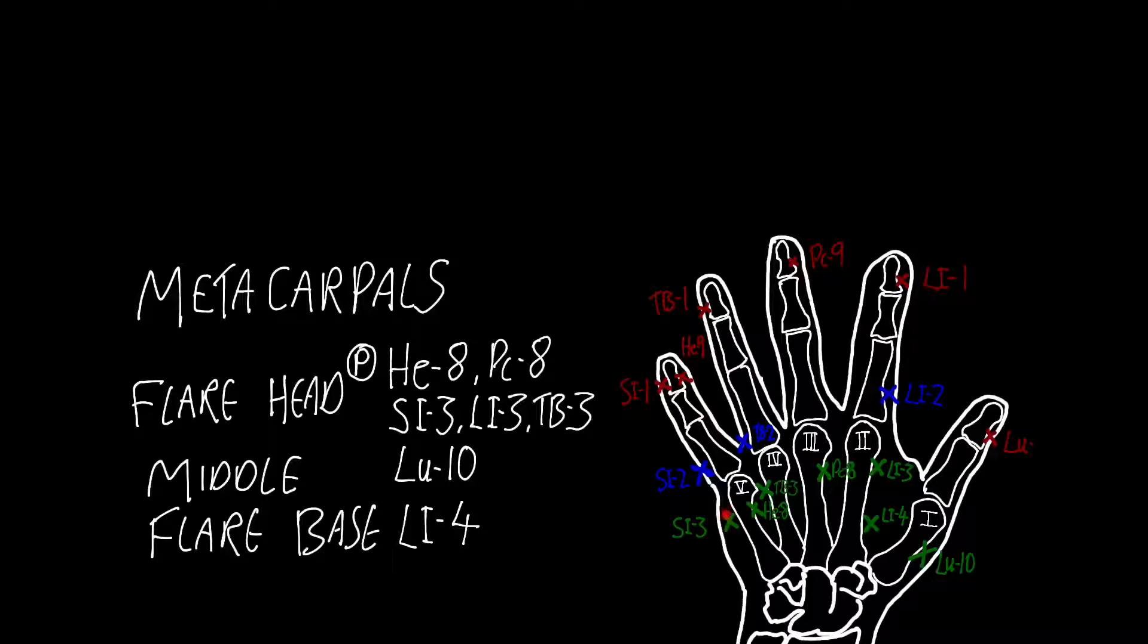We've got small intestine 3, large intestine 3, and triple burner 3 at the flare of the heads on the dorsal aspect.